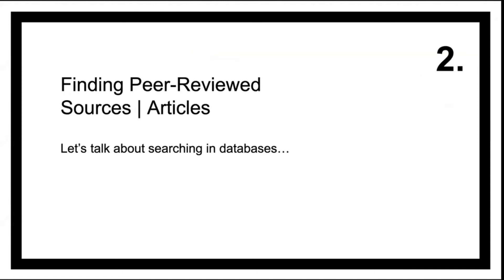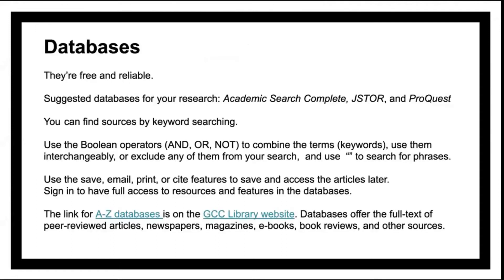Finding peer-reviewed sources — articles. Let's talk about searching in databases. Databases are free and reliable. Suggested databases for your research include Academic Search Complete, JSTOR, and ProQuest. You can find sources by keyword searching. Use the Boolean operators AND, OR, and NOT to combine or exclude keywords. Use parentheses to search for phrases. Use the save, email, print, or cite features to save and access articles later. Sign in to have full access to resources and features in the databases.